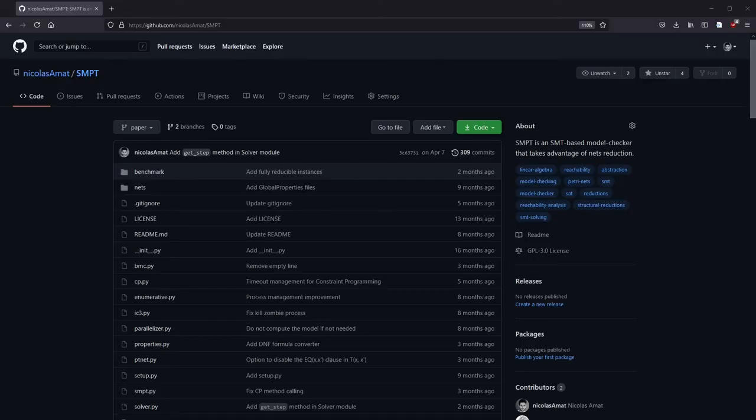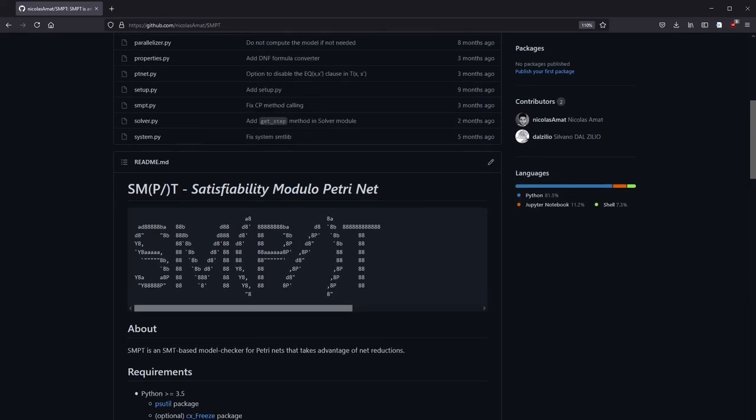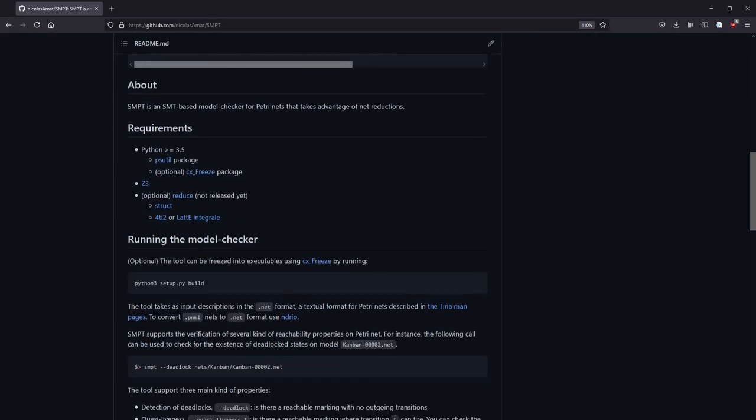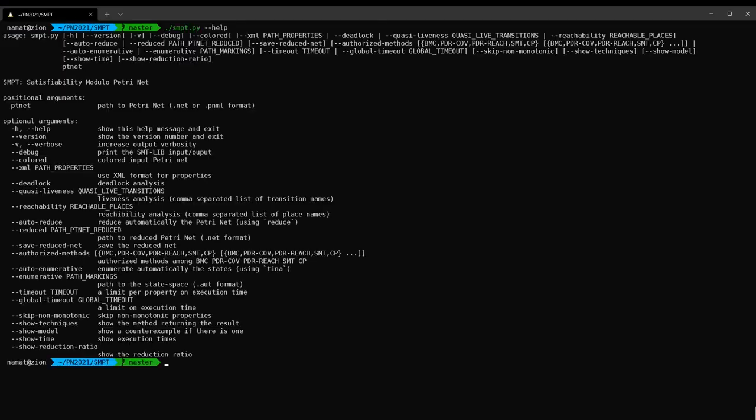From all this theory and this new framework, we developed a prototype model checker called SMPT for Satisfiability Modulo Petri Net. It is available online on GitHub, but we can have a look at this tool together.